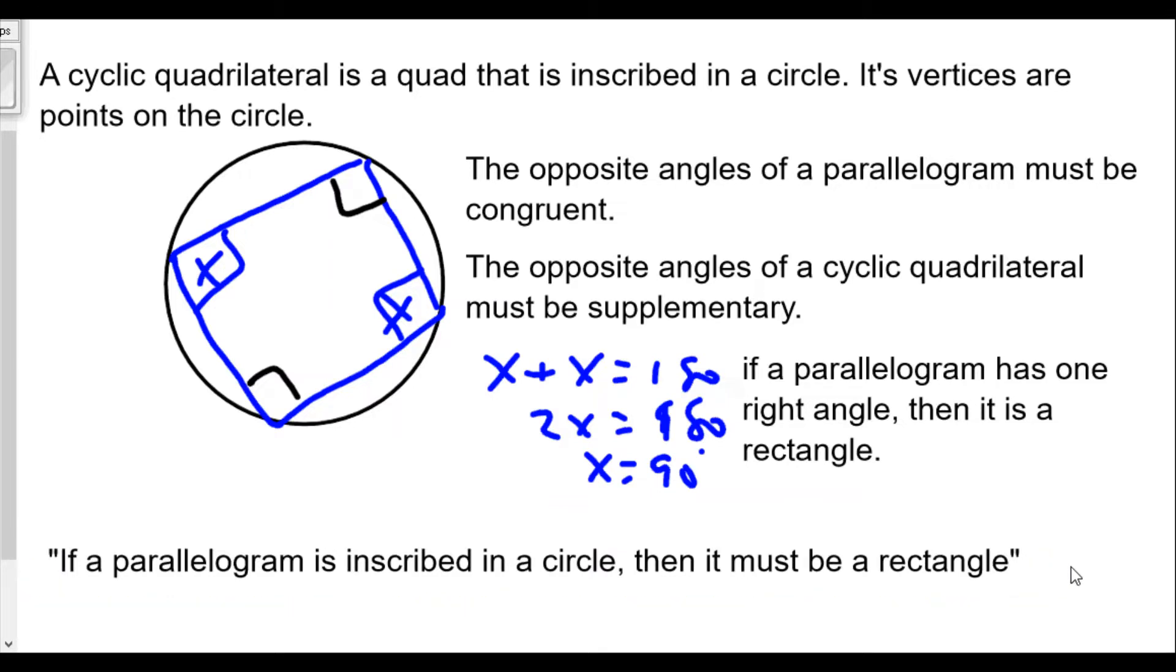We show that the idea that based upon what we know about any quad being inscribed in a circle and the properties of parallelogram show that if you have a parallelogram inscribed in a circle, it must be a rectangle because the angles must be 90 degrees.